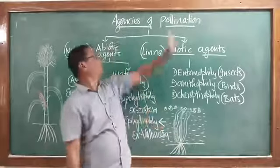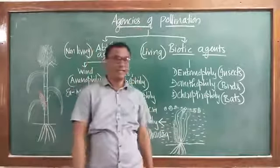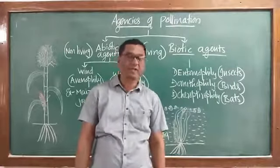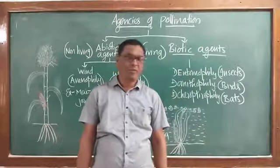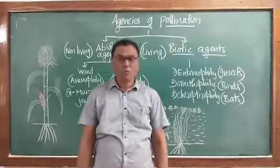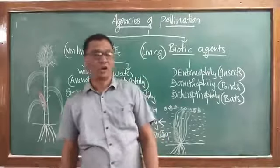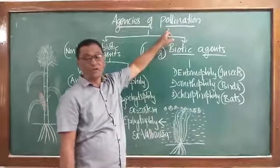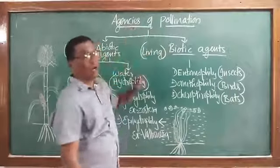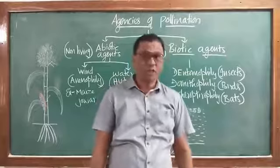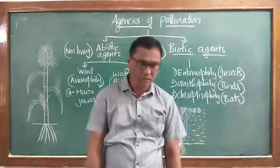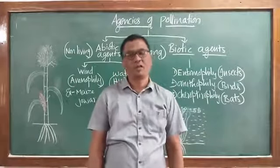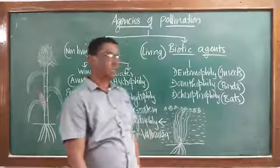The factors or things which bring about the transfer of pollen grains from anthers to the receptive stigma are known as agencies of pollination or agents of pollination. They are compulsorily required in geitonogamy and xenogamy.